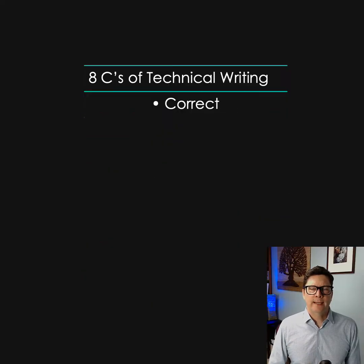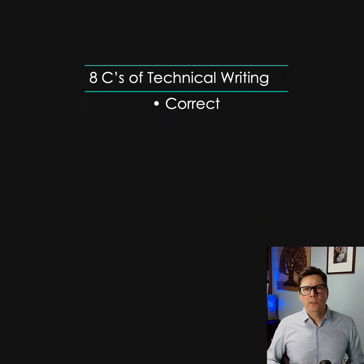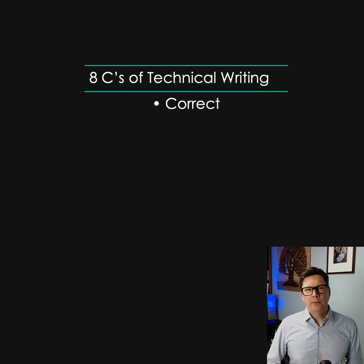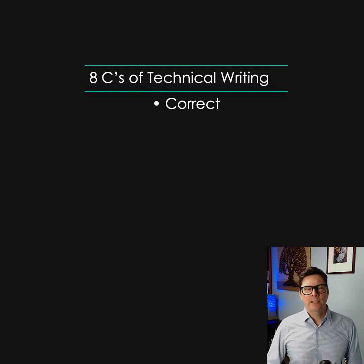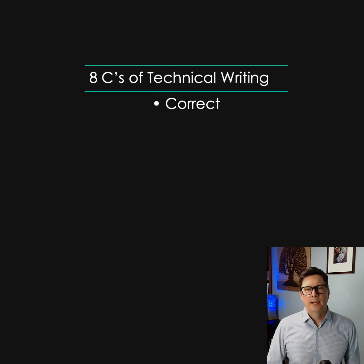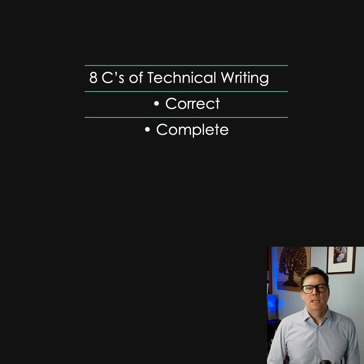The first C is correct. In technical writing you must absolutely be correct about everything you write. If you make any errors of fact, if you say anything that's not correct, you're going to lose all credibility with your readers and they're not going to believe anything you say.